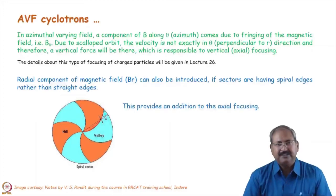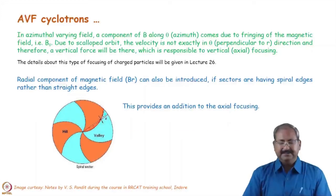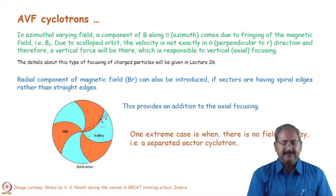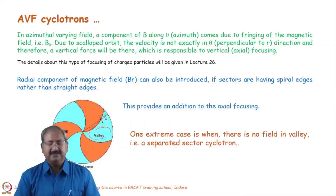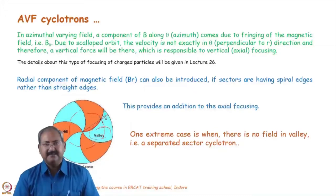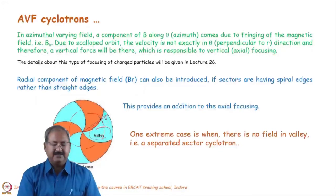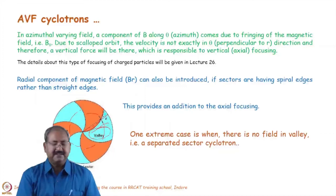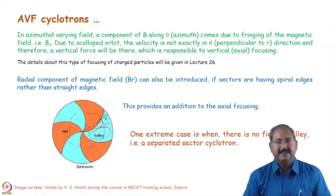So, these two components make a very strong focusing mechanism available in the cyclotron in the vertical. One extreme case may be there that we remove the magnetic field completely from the valley means we make B is equal to 0 in the valley means there is no magnet and then there is a strong magnet, then there is no magnet, then strong magnet, then no magnet, then strong magnet. So, this type of magnet, then there is no magnet, then we can keep RF cavities for particle acceleration. So, even in a single turn, many RF cavities can be kept and this type of cyclotron is also known as ring cyclotron.